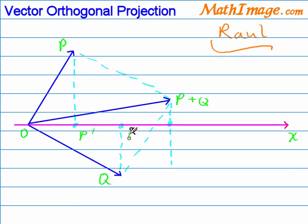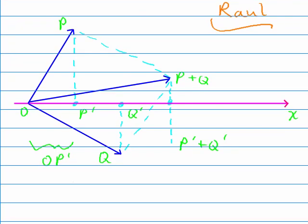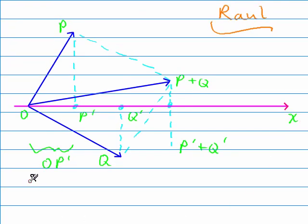We'll call the intersections P' and Q'. So the resultant vector projection we'll call P' plus Q'. And you can see from the distances here that the distance OP' is the first projection, and the distance OQ' is the second projection.